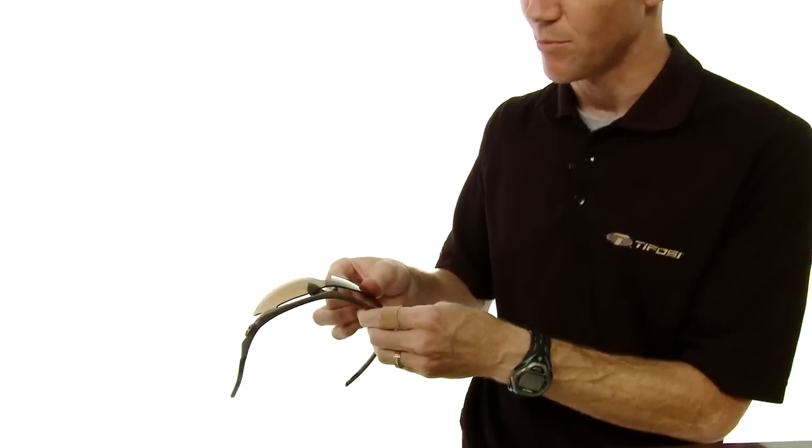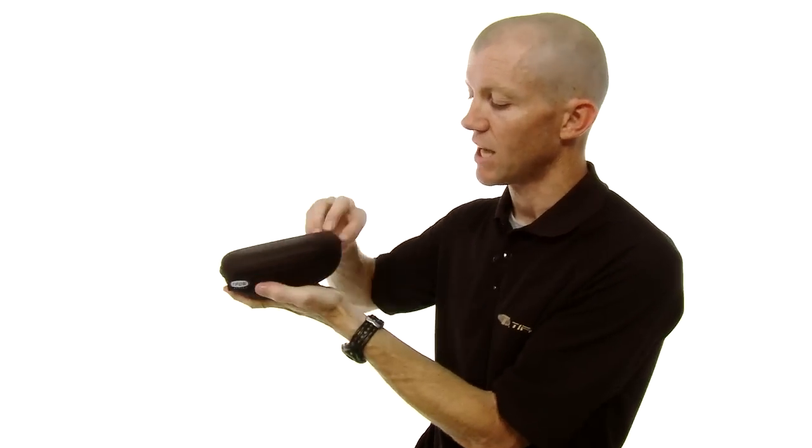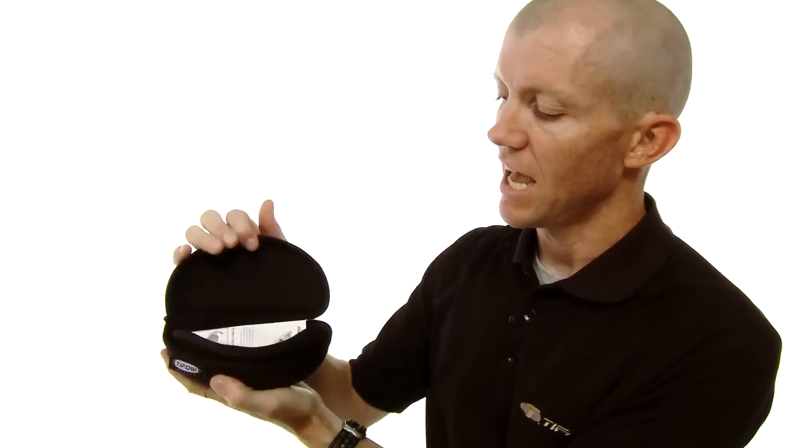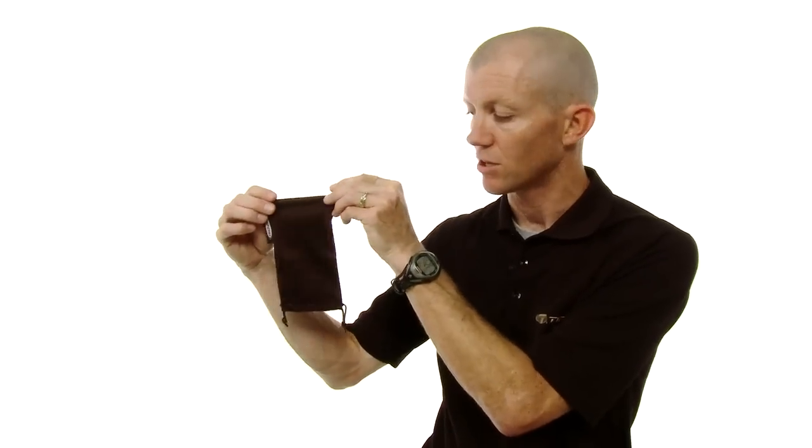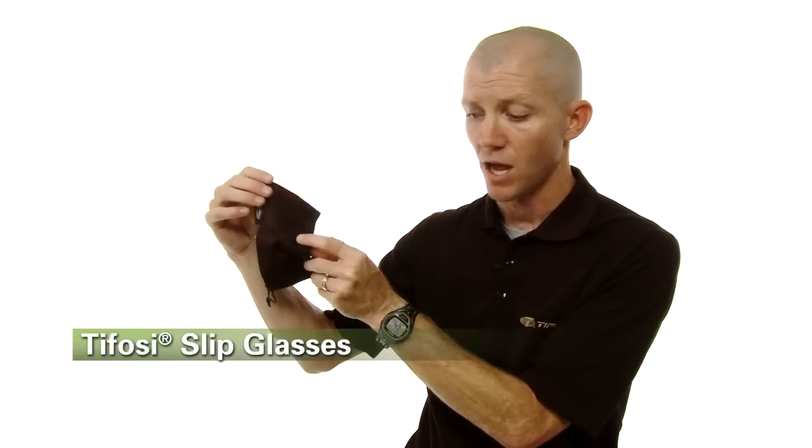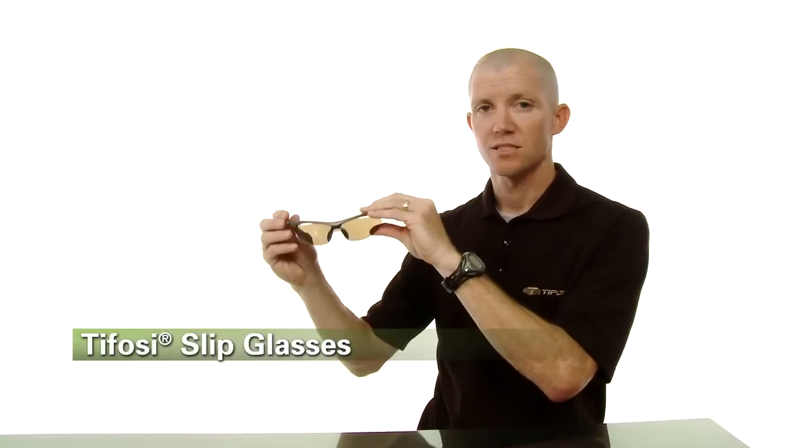All these come packaged up in a nice zip-up hard case so you can protect your glasses when you're off the bike and store your lenses. And like all Tifosi Optics products, they also come with a nice cleaning bag so you can clean your lenses before and after your ride. So that is the Tifosi Optics Slip sunglasses. Available at Performance Bike.